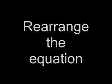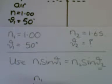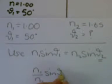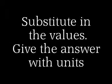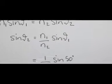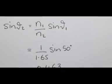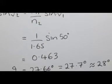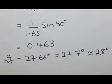Snell's law: N1 sin theta 1 equals N2 sin theta 2. Rearrange the equation to get sin theta 2 equals N1 sin theta 1 divided by N2. Substitute in the values and remember to have your calculator in degrees and not in radians. The answer is 27.7 degrees, rounded to 28 degrees.